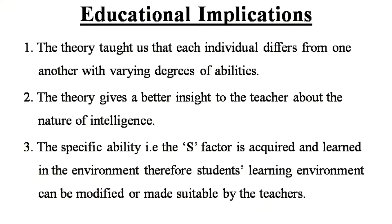Lastly, let us see the educational implications of this theory. Firstly, the theory taught us that each individual differs from one another with varying degrees of abilities. Therefore, each child is unique and each one has their own capacity. The second is the theory gives a better insight to teachers about the nature of intelligence. And the third educational implication is the specific ability, that is the S-factor, is acquired and learned from the environment, and therefore students' learning environment can be modified or made suitable by teachers for effective learning.